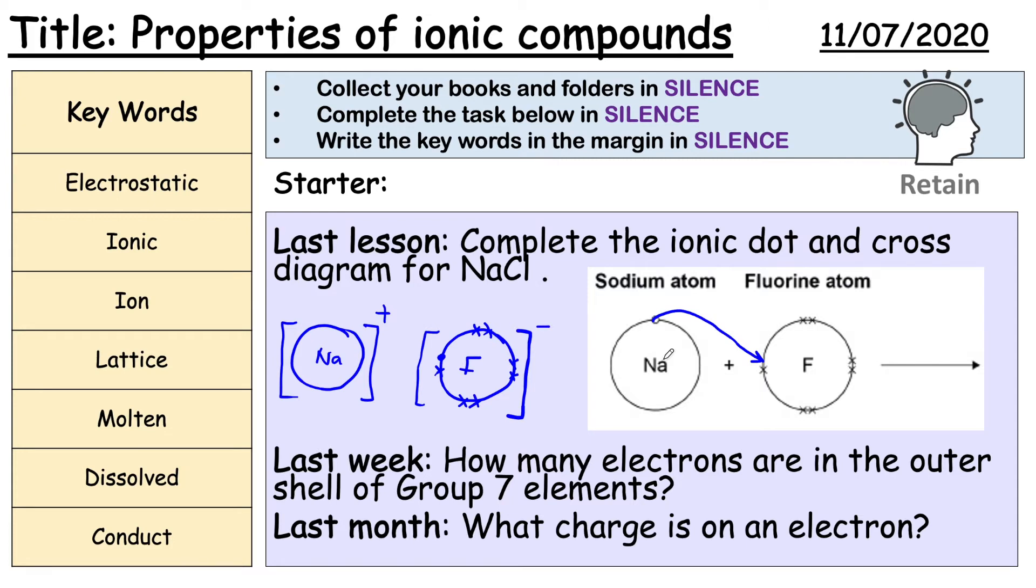Right the next question says how many electrons are in the outer shell of group seven? Well in the last video I gave you a tip to say that whatever the group number is that's how many electrons there are. So in here there would be seven electrons. And then finally what is the charge in an electron? Electrons are negatively charged. And you'll see it sometimes written like that to show negative. It's a shorthand way of saying it.